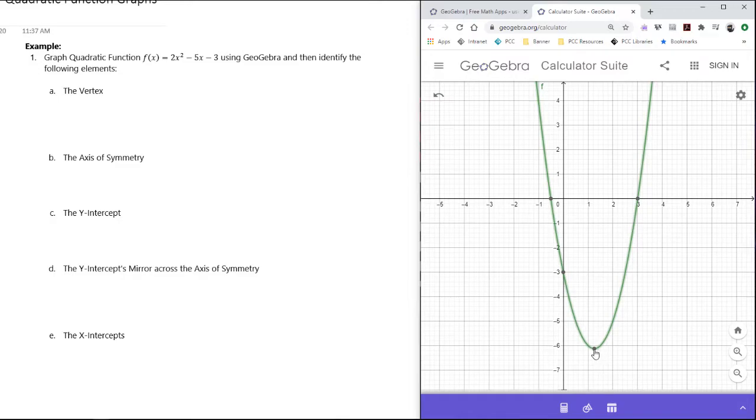We want to find the vertex first. The vertex is the highest or lowest point on the parabola. It's the turning point that we have where the parabola is going down and then it switches to going up, so it's this bottom point right here. We see that this vertex is at 1.25, -6.125.